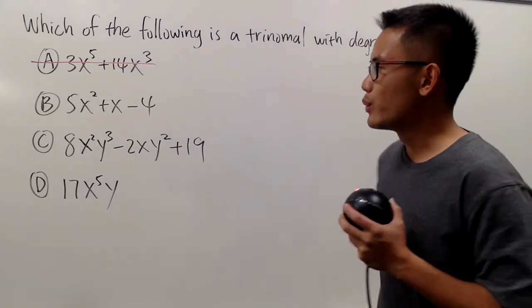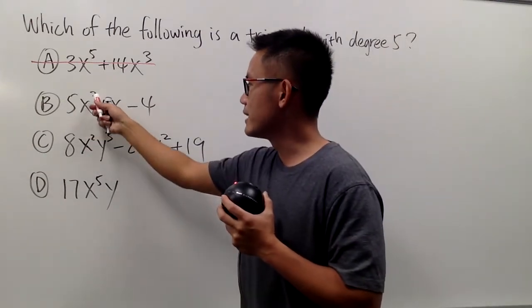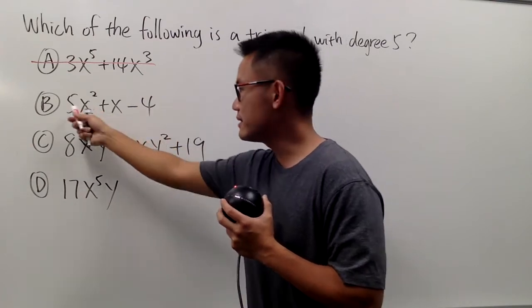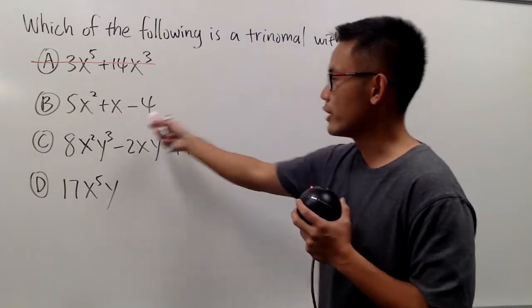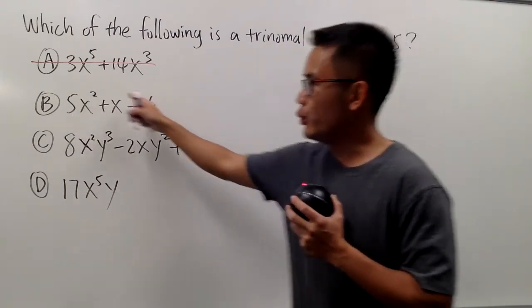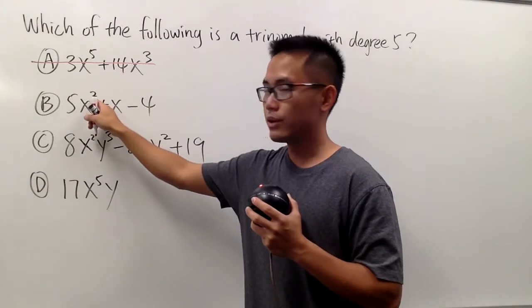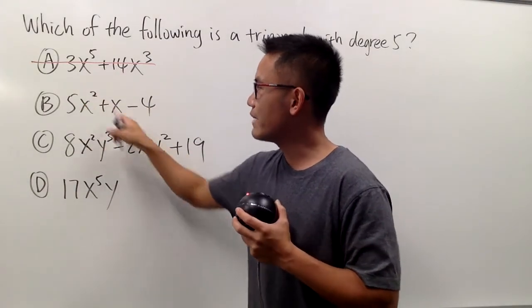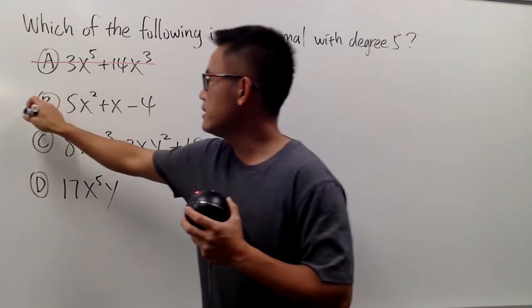Next one right here, we have 5x to the second power plus x minus 4. It is with three terms, so it is a trinomial, but the degree here is just a 2, because the highest power that we have is 2. So once again, this is not the answer either.